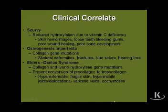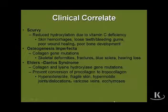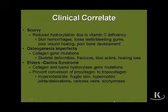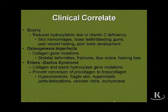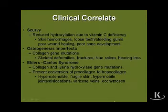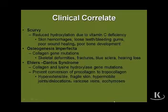Osteogenesis imperfecta is a type 1 collagen-associated gene mutation. What is seen in these individuals are tremendous skeletal deformity and fractures. One of the classic presenting signs is a blue sclera, because the connective tissue is thin in the sclera, revealing the underlying blood vessels, along with hearing loss.